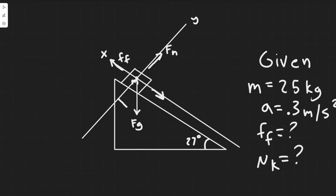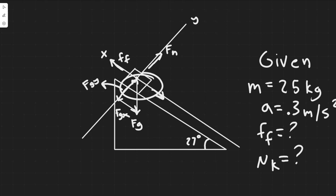To decompose gravity, draw a small triangle. One side is parallel to the incline — that's fg_x. The other side is along the y-axis — that's fg_y. Now all forces are properly aligned with their respective axes: fg_x on the x-axis, fg_y and the normal force on the y-axis.